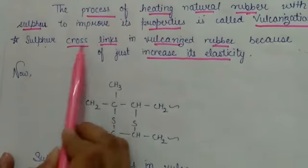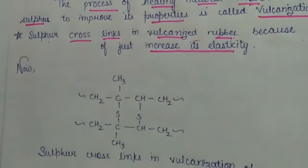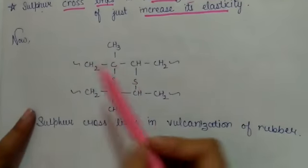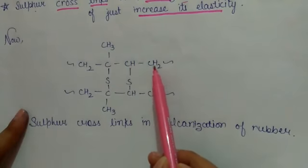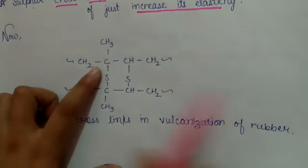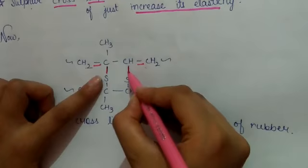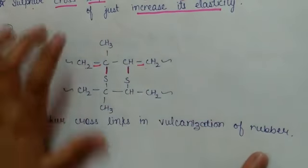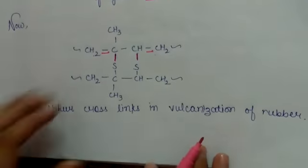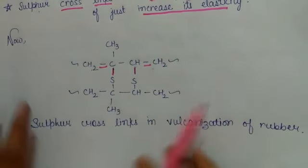Now sulfur cross links in vulcanization rubber. Because of this, elasticity increases. Sulfur atoms attach where the double bonds were. The sulfur cross links in vulcanized rubber are very important as elasticity and strength increase.